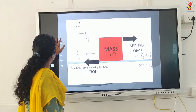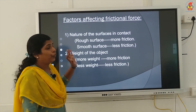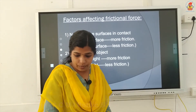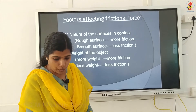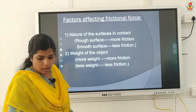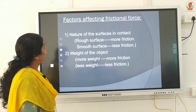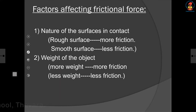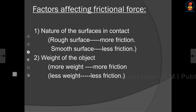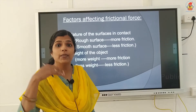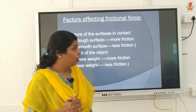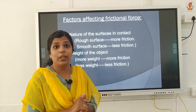Now, the factors affecting frictional force. Two factors are there: one is the nature of the surface in contact, and the second is the weight of the object. Nature of the surface in contact means rough surface has more friction. For a rough surface, irregularities will be there.